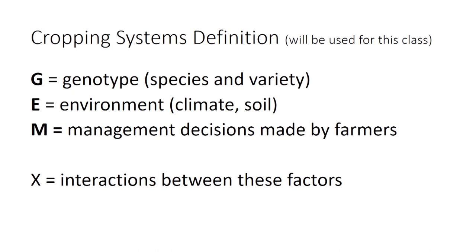G, genotype, is a fancy word that describes the crop species — is that corn, soybeans, wheat, et cetera? And then the variety. Even within something like soybean, we can get more specific about the genotype: what is the maturity group, is it determinate or indeterminate? Even more specific — when was that variety released? Is it a newer, high-yielding variety or a 50-year-old variety of soybean? So we can get more specific about the genotype of that cropping system.